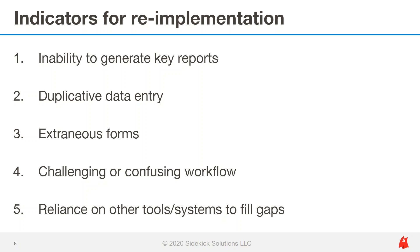Number three, extraneous forms and fields — collecting data that you aren't really using, usually a result of outdated forms or a one-to-one paper form translation. Number four, confusing workflow: navigation with lots of clicks or feeling like you're bouncing around the system. Number five, relying on external tools or systems to fill gaps. Apricot is pretty robust, so if you feel like you're piecing things together that you should be able to do in Apricot, you could likely benefit from a system assessment.